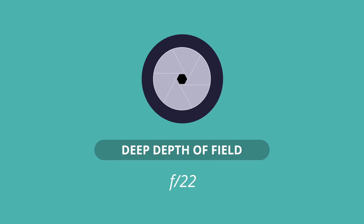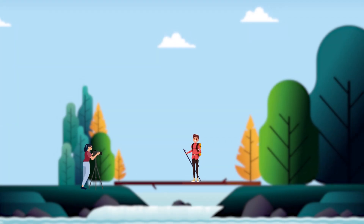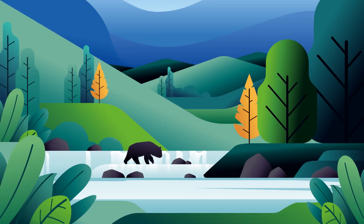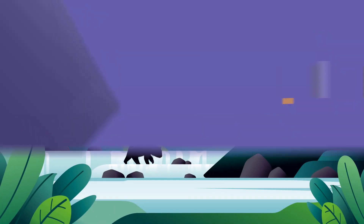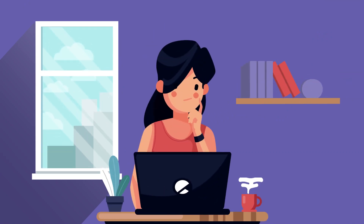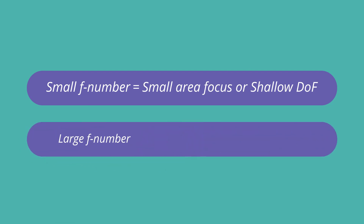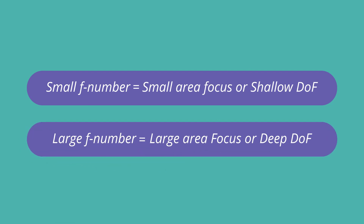On the other hand, using a narrow aperture — that is a large f-stop — will increase your depth of field, also referred to as deep depth of field. This means that a greater area of the image will appear in sharp focus. Landscape photographers generally use narrow aperture settings to capture sweeping scenes in great detail. Simply put: a small f-number means a small area of focus, and a large f-number means a large area of focus.